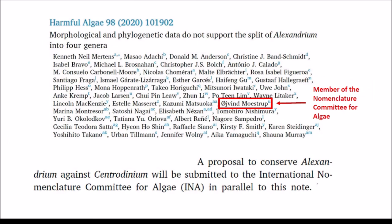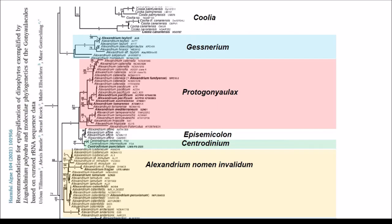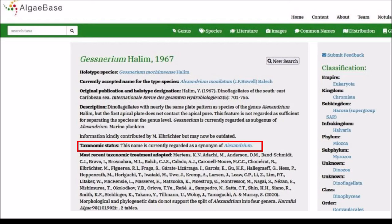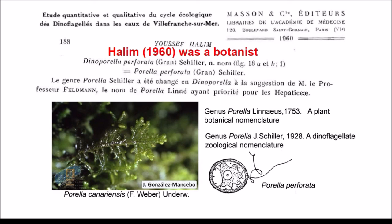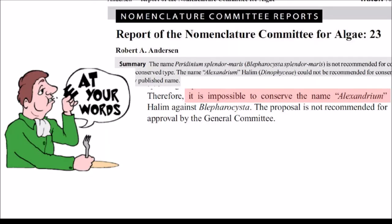However, the members of the Nomenclature Committee for Algae do not follow the rules, and they proposed to conserve Alexandrium over Centrodinium. The solution is clear: Alexandrium is not monophyletic, and we already have different genera with species already transferred, so there is not a very big change. The only problem is to find a name for the genus Alexandrium, which is invalid. The solution proposed is to mix this with the zoological nomenclature — try to have zoology accept this botanical name — so that Alexandrium will be a valid name. And what to do about Centrodinium having priority over Alexandrium? Submit a proposal to the General Committee to reverse the priority. Halim was a botanist and we cannot discuss this, and the General Committee was right — it is impossible to conserve the name Alexandrium.